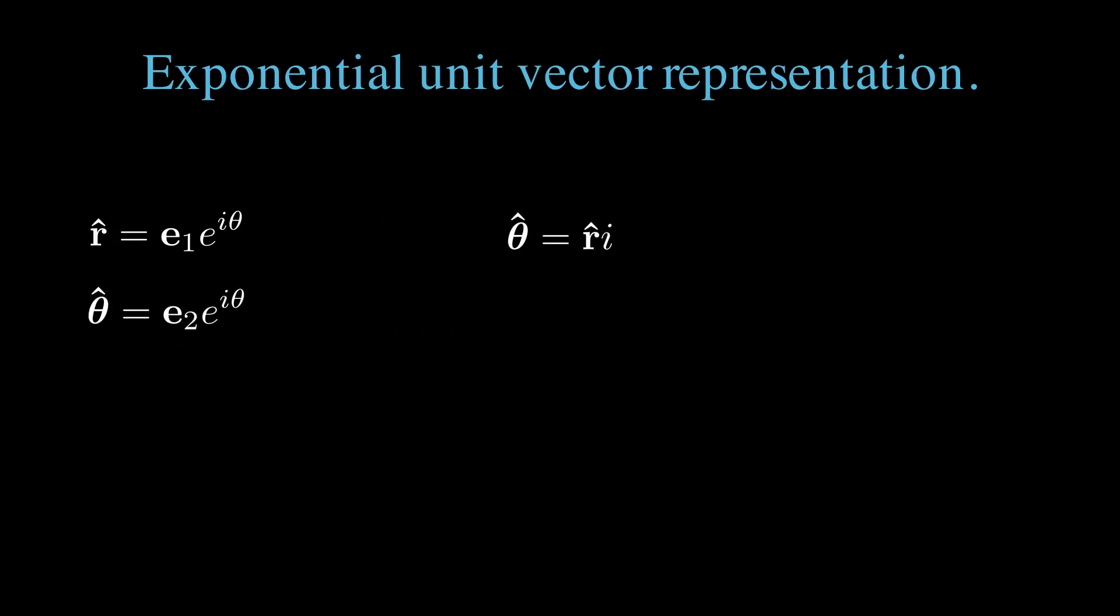We can also show that theta hat is r hat times i. Let's expand that. e1 times e to the i theta times i, but i commutes with e to the i theta. Now we have e1 times i, which is e2, leaving theta hat is e2 times e to the i theta, which is what we expected.